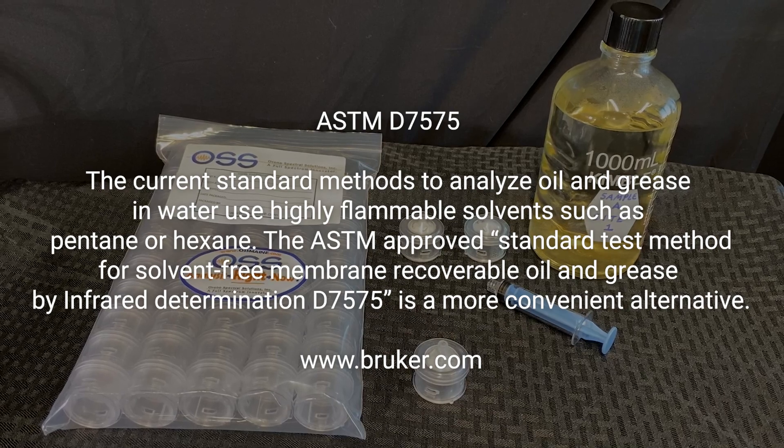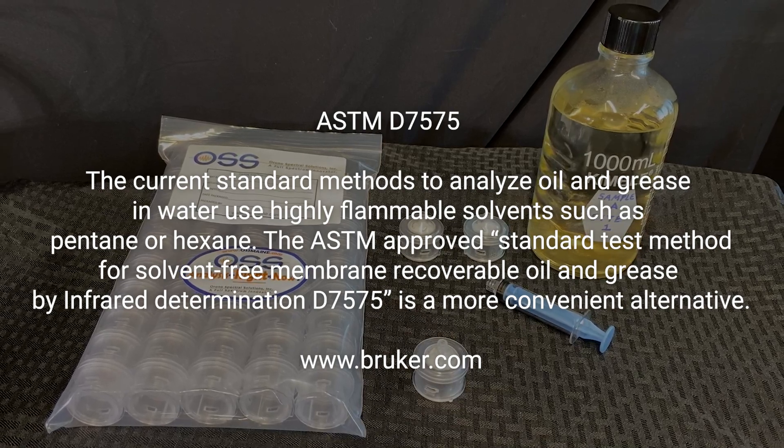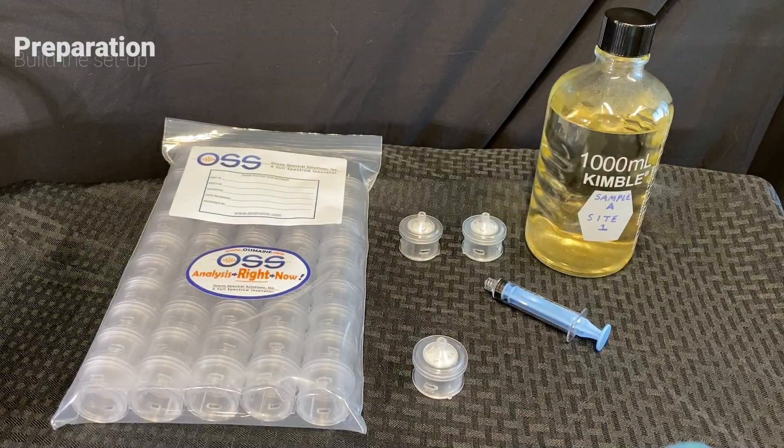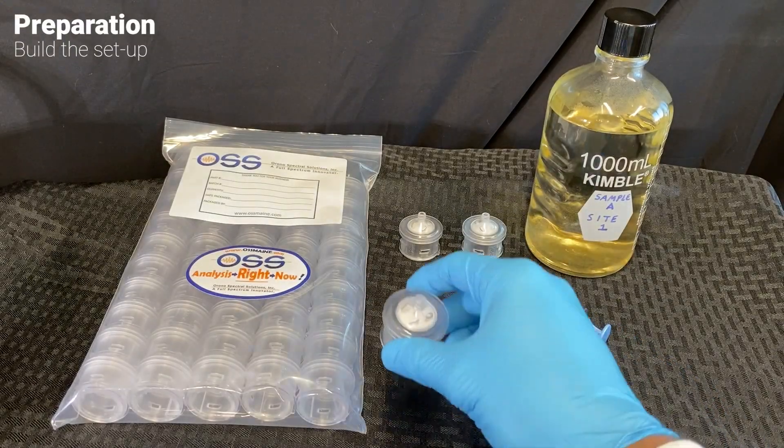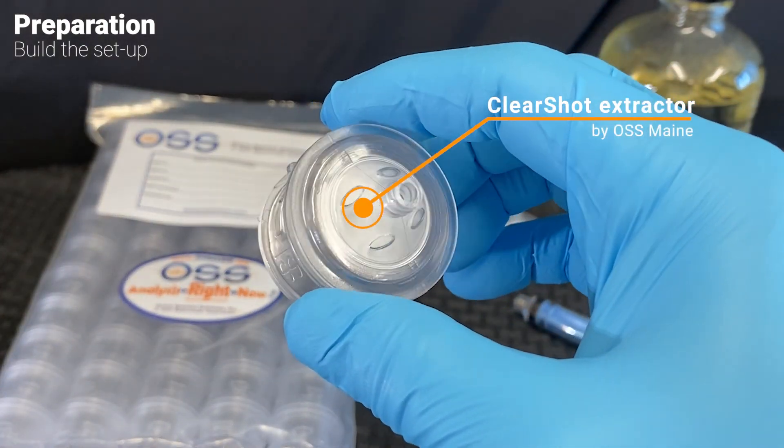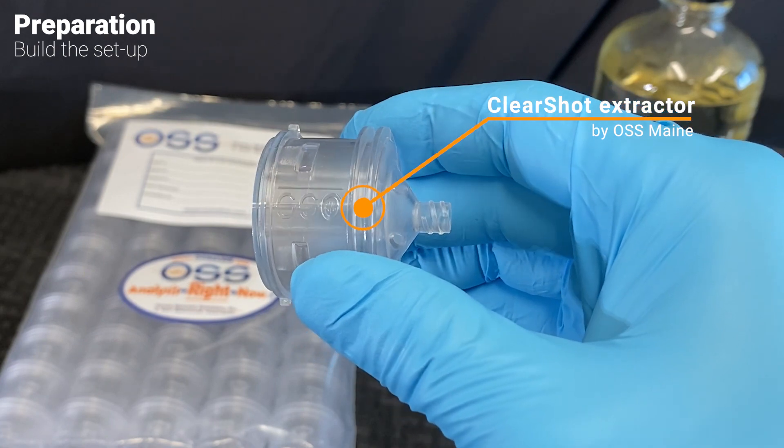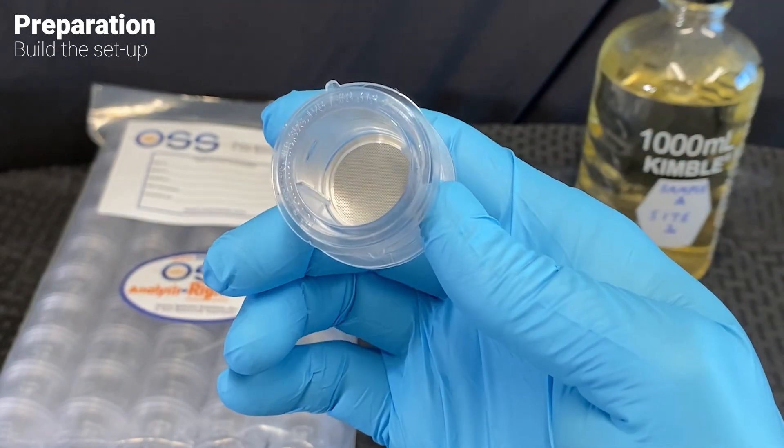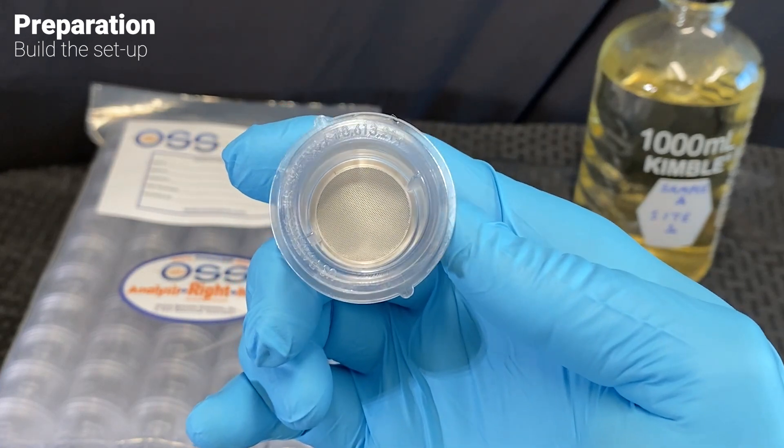This method combines the use of solid phase extraction and infrared spectral analysis. More specifically, we will be using an Alpha 2 FTIR spectrometer and a ClearShot extractor by OSS. Its oil trapping membrane retains all oils and greases when water is run through the filter. With the setup complete, we can move on to sample preparation.